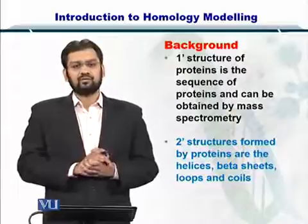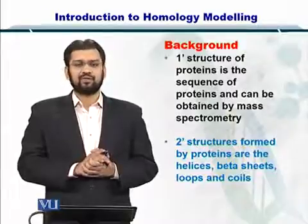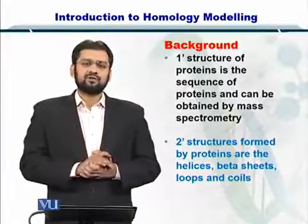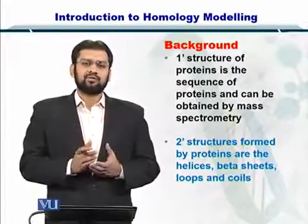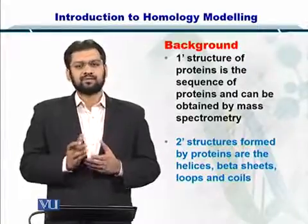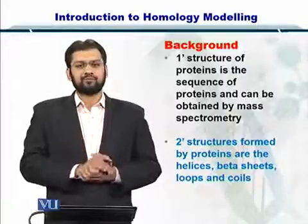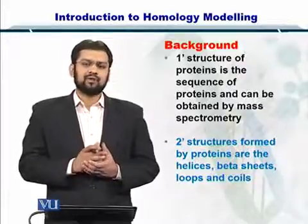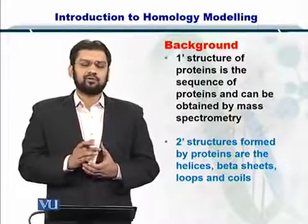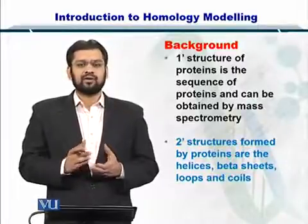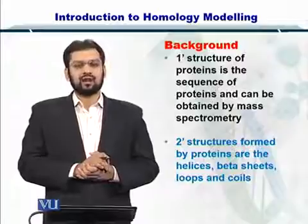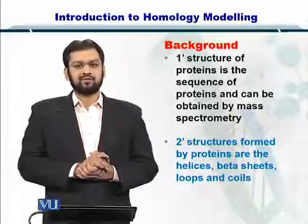Next, you have the secondary structures of proteins, which include helices, beta sheets, loops, and coils. These structures are formed when the primary sequence of proteins comes together and folds to take these three-dimensional shapes.